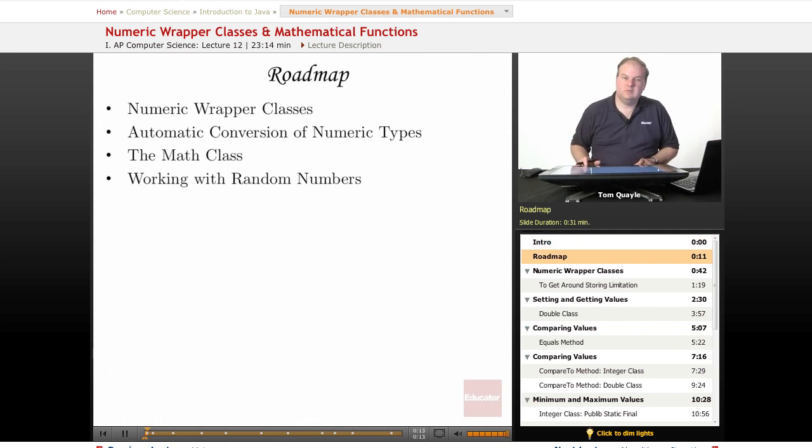In today's lesson, we'll first talk about numeric wrapper classes, what they are, and how to use them. We'll briefly talk about automatic conversion of numeric types. Then we'll look at one of the standard classes provided in the Java Standard Library, which is the math class, and some very useful things that you can find in the math class. And then we'll look in greater detail about one of the things that the math class offers, which is the capability of working with random numbers.